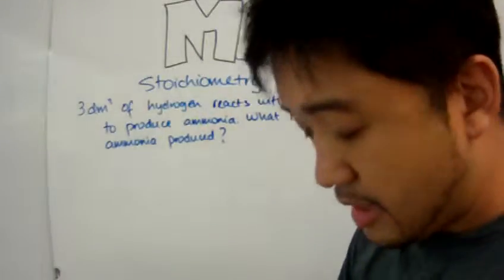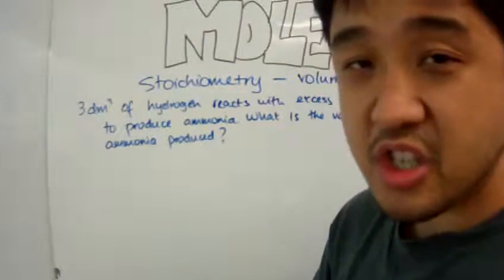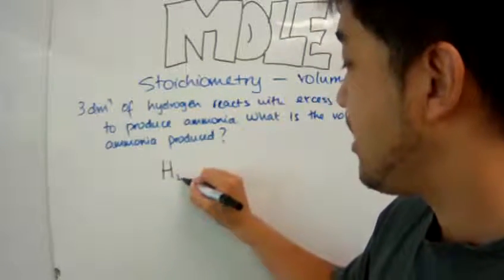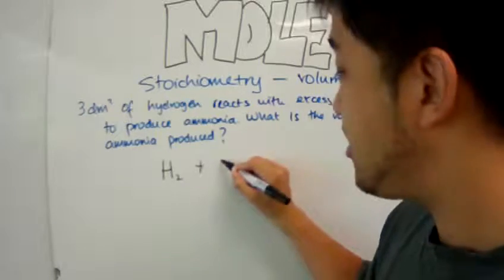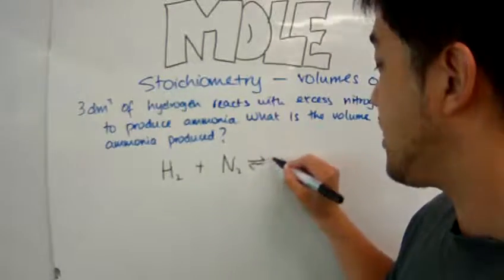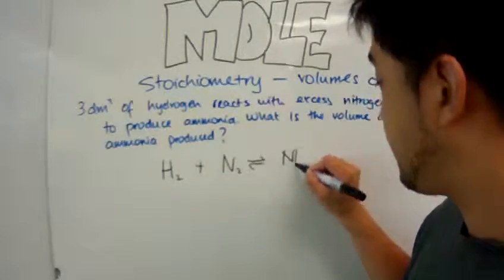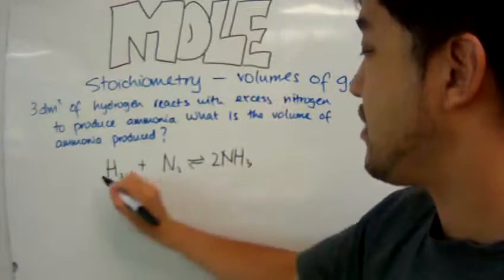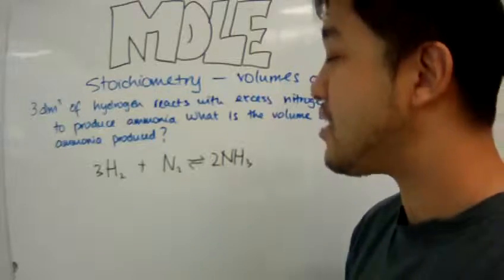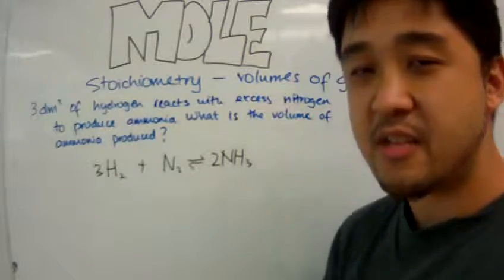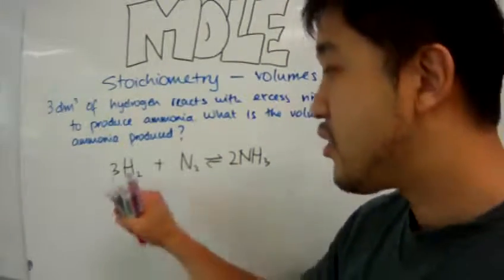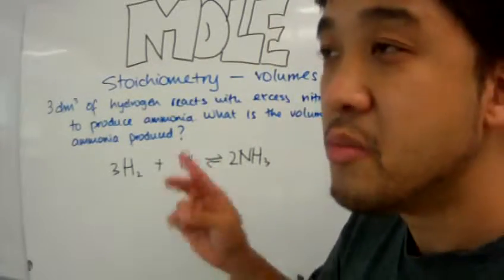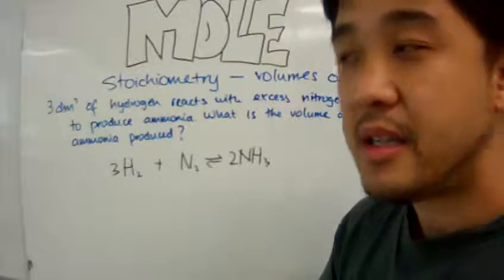Well, first of all, let's write the balance equation like we always do. So, we have hydrogen reacting with nitrogen to form ammonia. Let's balance this equation now. And when we balance the equation, we can see that from the balance equation, three moles of hydrogen will react with one mole of nitrogen to produce two moles of ammonia.